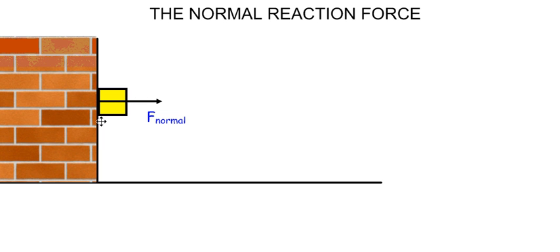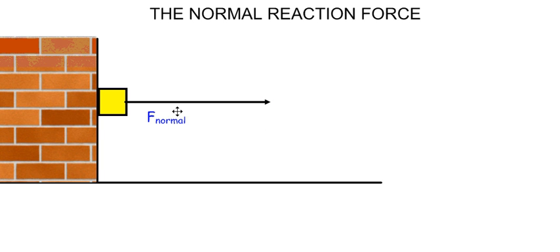The normal force is usually indicated anywhere on the body that shows its direction and roughly its size — not necessarily at the starting point of the reaction force. Now, if the action force of the crate on the wall was increased, that will increase the reaction force, and therefore the normal. If the action force was decreased, that will decrease the reaction and therefore the normal. If there was no action force of the crate on the wall, then there would be no reaction, and therefore no normal force.